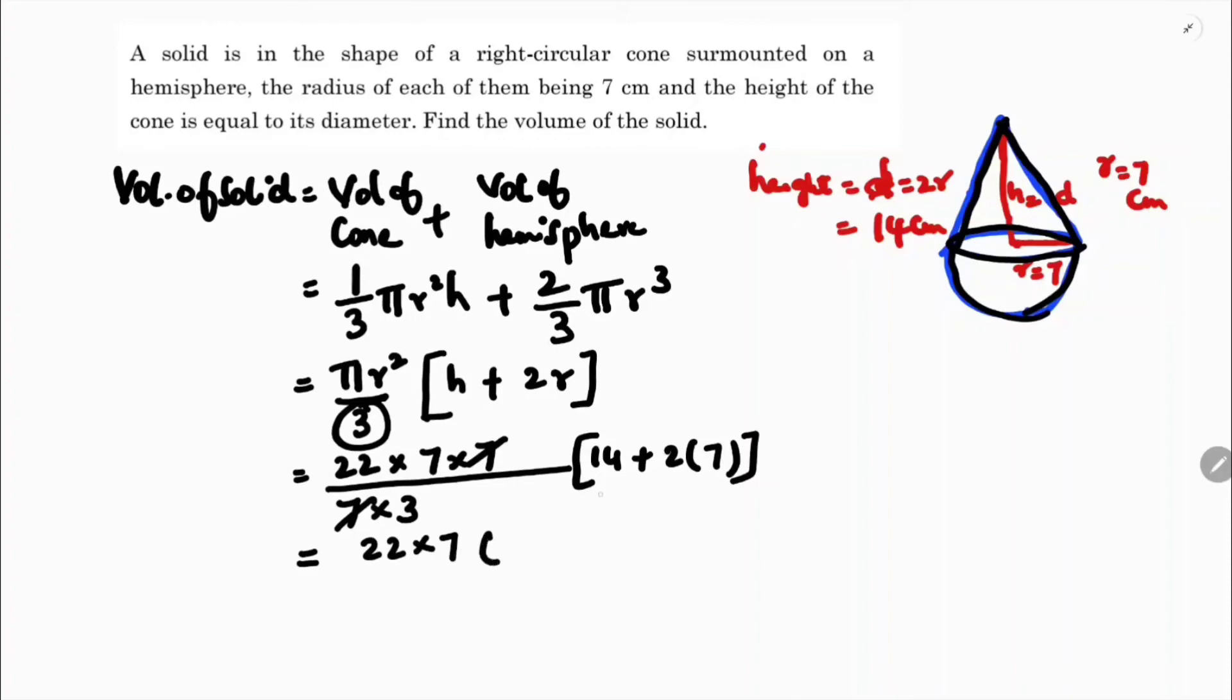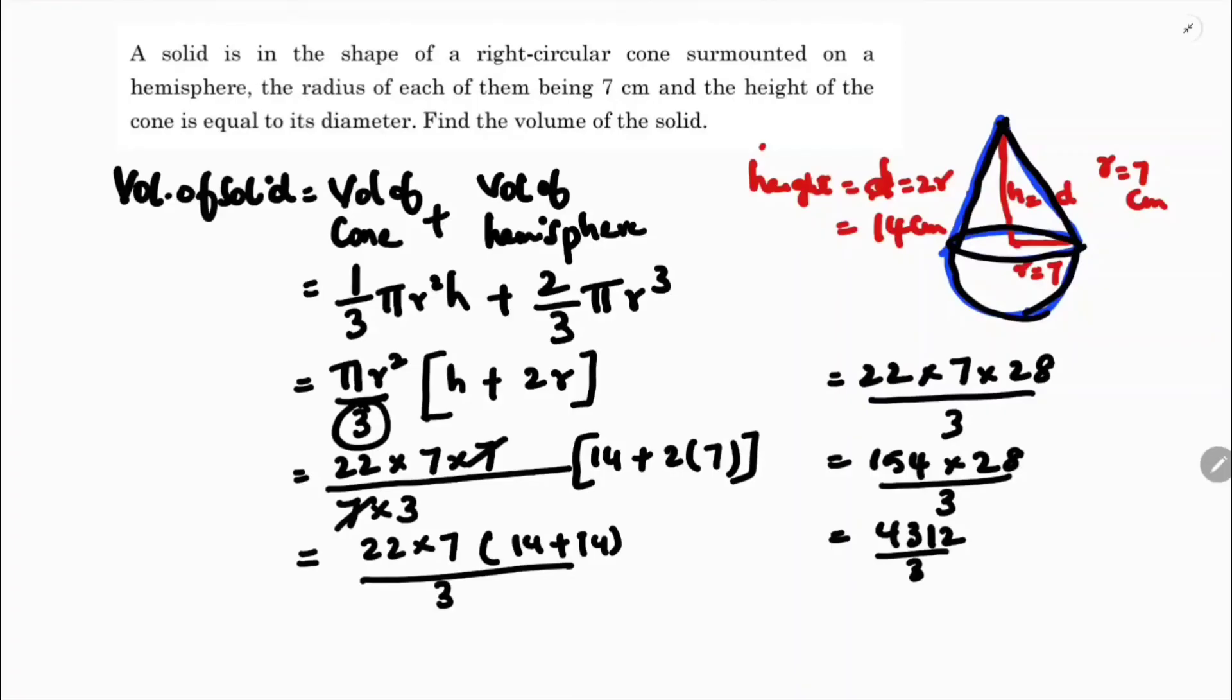22×7×28/3. So 154×28 equals 4312/3. 4312 divided by 3 is 1437.33 centimeter cube. So this is the volume, 1437.33 cm³.